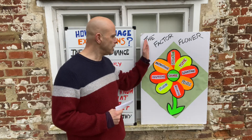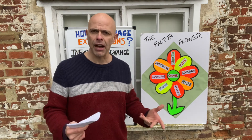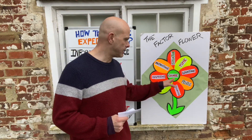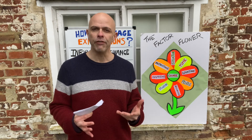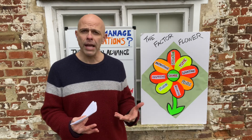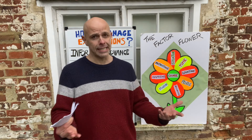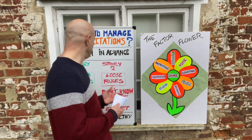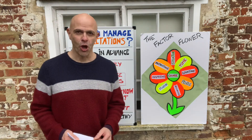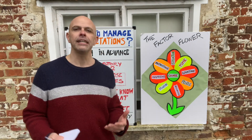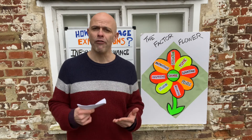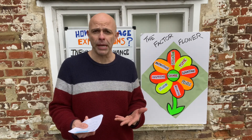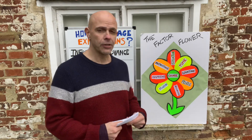Why? Because on this flower there are eight petals — therefore eight factors — plus an additional one right in the middle, which makes it nine. There are a total of nine factors to consider when setting expectations, but we're concentrating on the green story — the good story, the healthy story — when setting high expectations. Each petal refers to a factor, and each factor is basically a topic to include in the brief of your expectations.